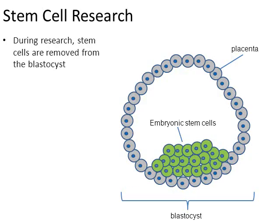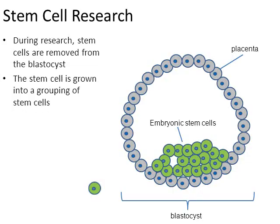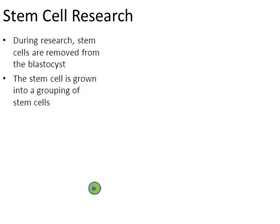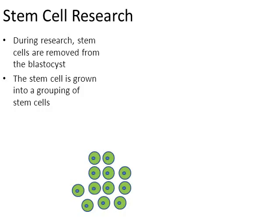During research, a stem cell might be removed from the blastocyst. Unfortunately, removing that stem cell destroys the remainder of the blastocyst — and that is the heart of the controversy, which we'll come back to. That one green stem cell is grown into a grouping of stem cells. It multiplies and multiplies in a lab, in a petri dish — not in a woman's uterus. This creates what's called a stem cell line: a small group of stem cells derived from one original stem cell.